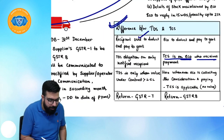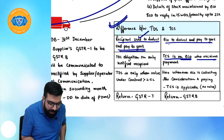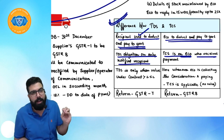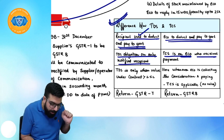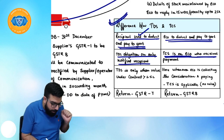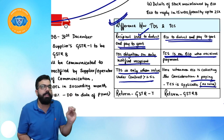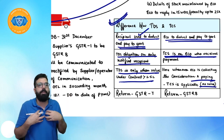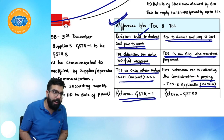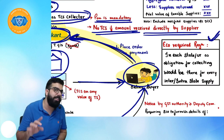Key differences between TDS and TCS: In TDS, the recipient deducts and pays to the government; in TCS, the e-commerce operator deducts and pays. TDS obligation is only on notified recipients; TCS is on every e-commerce operator receiving payment on behalf of the supplier. TDS applies only when contract value exceeds ₹2.5 lakh; TCS has no value limit and applies regardless of value. TDS filer files GSTR-7; TCS filer files GSTR-8.